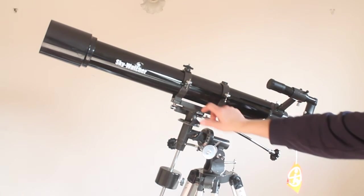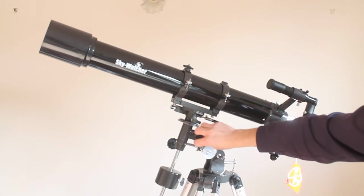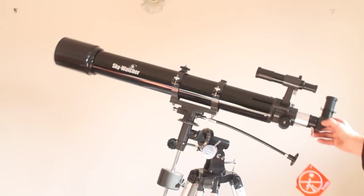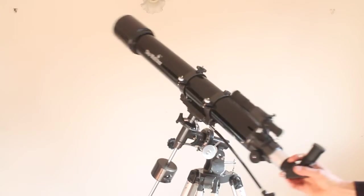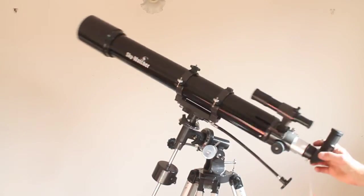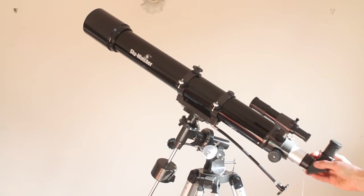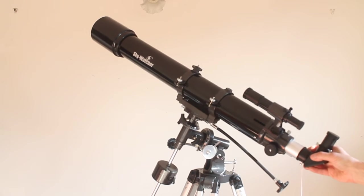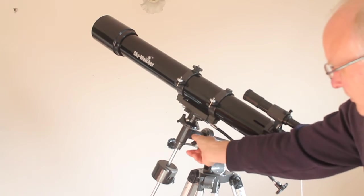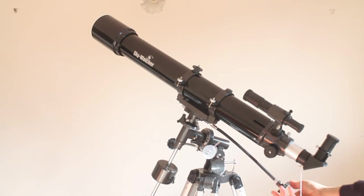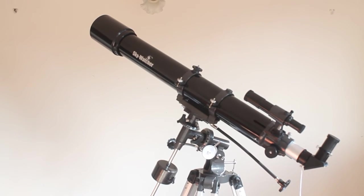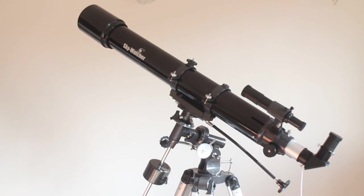So here and here, these two nuts here you can slacken those off and I've got it nicely balanced so wherever I leave it it stays there wherever I move it to. Look at that, how easy, that's effortless. So what you do is you find using the finder scope, center whatever you're looking at, tighten that up, you don't have to over tighten it, and then you have your slow motion controls for your fine adjustment and thankfully it stayed in view while I was doing that.